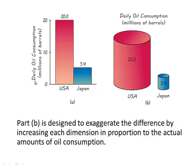Let's look at some pictographs. In this bar chart, we see the comparison of the United States to Japan in daily oil consumption. The vertical axis starts at zero. The United States is 20 and Japan is 5.4, so the US is about less than four times the consumption of Japan. Now if we look at this three-dimensional graph — cylinders, probably to represent oil barrels — the height is correct, same as the bar chart, but the problem is the United States appears more than four times larger than Japan.